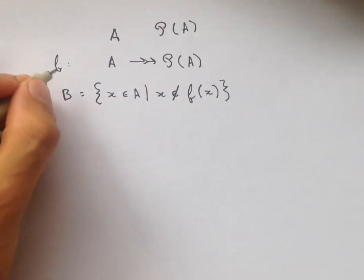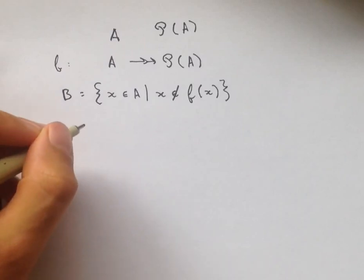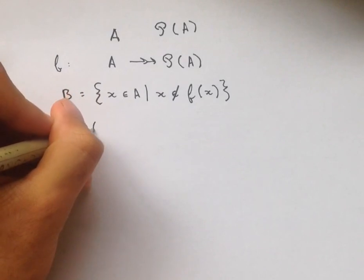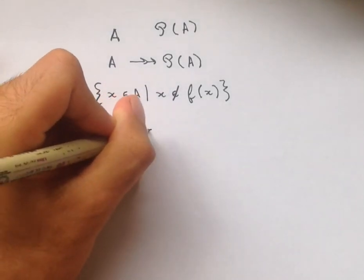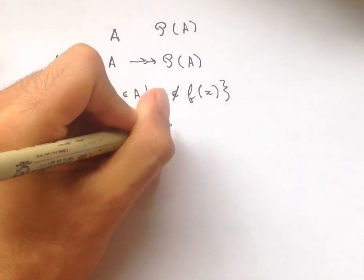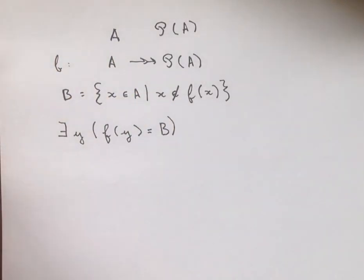And so since F is a surjection, we know that there exists a Y such that F of Y is equal to B. Because B is a subset of A and that means that it is an element of the power set of A, and so our function F must map onto it for some element and we're going to call that element Y.